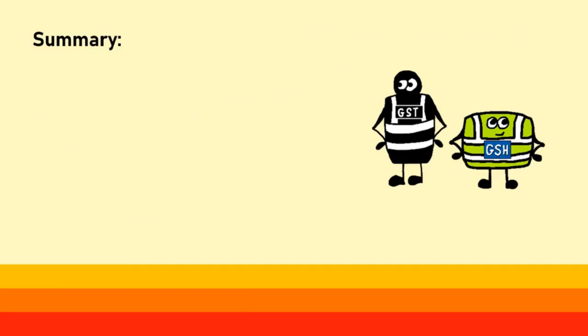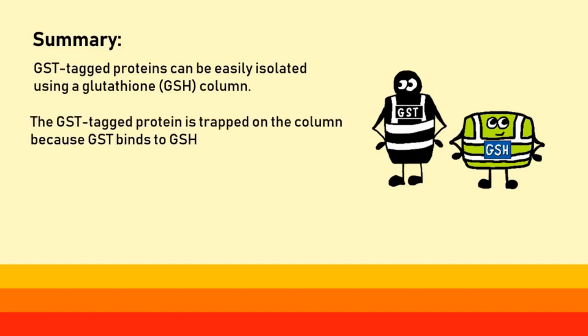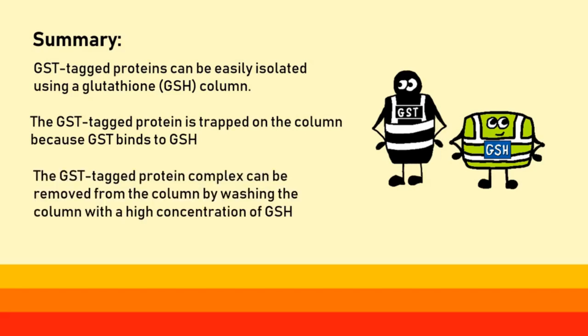To summarize: GST-tagged proteins can be easily isolated using a glutathione (GSH) column. The GST-tagged protein is trapped on the column because GST binds to GSH. The GST–protein complex can then be removed from the column by washing with a high concentration of GSH.